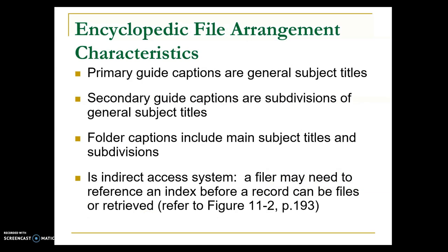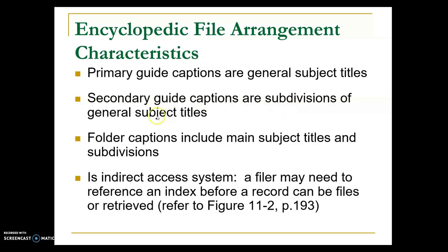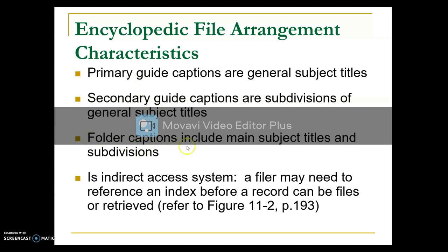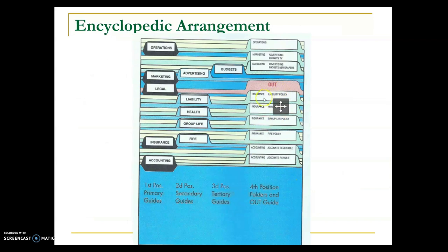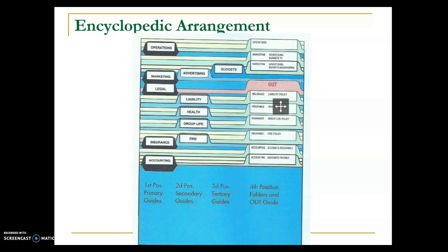The characteristic of the encyclopedic file arrangement is that primary guide captions use the full subject title name, while secondary guide captions show the subject name as a subdivision of the general subject title. For example, the primary card would show Insurance, and the secondary card would show Life Insurance. Folder captions include both the main subject title and the subdivision. All guides — primary, secondary, tertiary — use the subject name in full rather than a single letter.